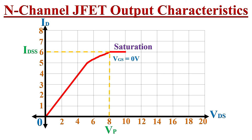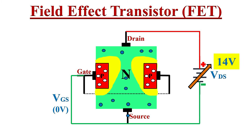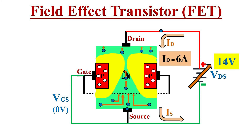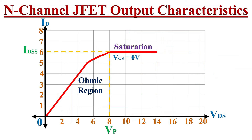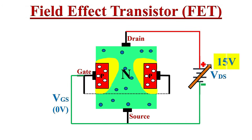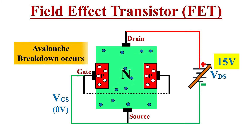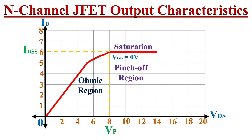This constant current is identified as saturation current IDSS, and the voltage at which drain current becomes constant is the pinch-off voltage. This region is the ohmic region. Up to 14 volts, current flow is constant at 6 amperes, represented as a horizontal line — this is the saturation or pinch-off region. After 14 volts, any small increase in VDS causes avalanche breakdown and a very high current will start flowing through the JFET, represented as a vertical line in the output characteristic curve.